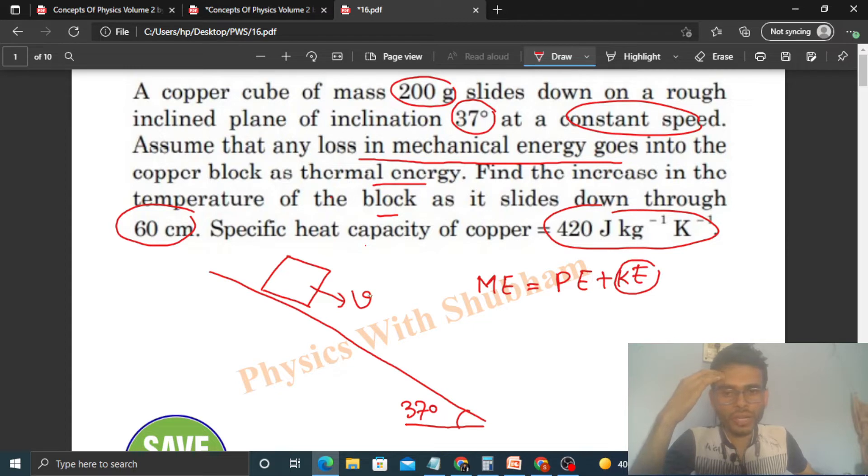If we talk about this block's mechanical energy—potential energy plus kinetic energy—the kinetic energy will remain constant because this block is at constant speed. Kinetic energy is half m v squared, right? Mass constant and speed constant, so kinetic energy constant. But the potential energy will decrease continuously. As this block moves down, it will travel a distance of 60 centimeters, something like this.